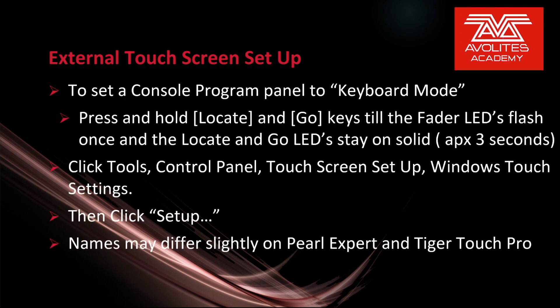To set a console's program panel to keyboard mode, press and hold the Locate and Go keys until the fader's LEDs flash once and the Locate and Go LEDs stay on solid — this takes approximately three seconds. Then click Tools, Control Panel, Touchscreen Setup, Window Touch Settings, and then click Setup. These names may differ slightly on a Pearl Export or a Tiger Touch Pro.